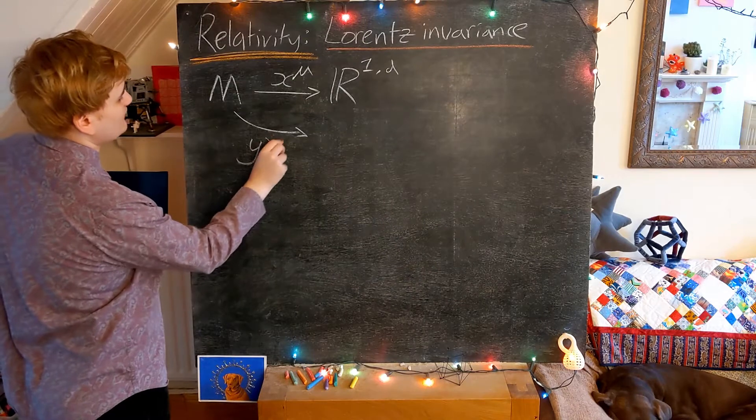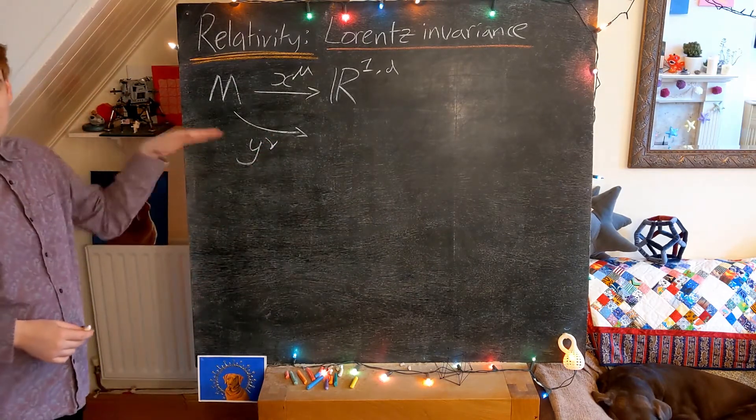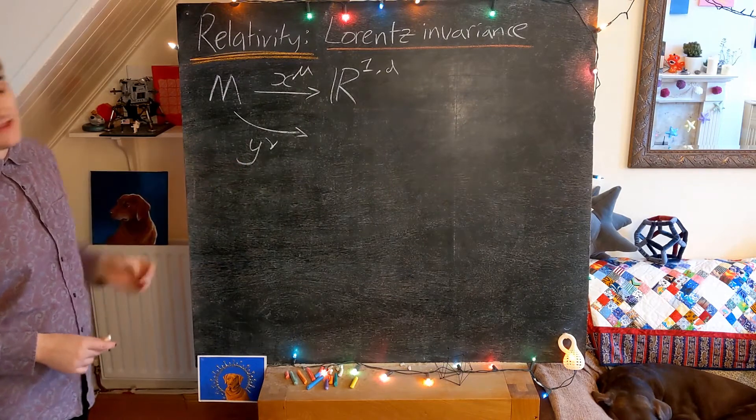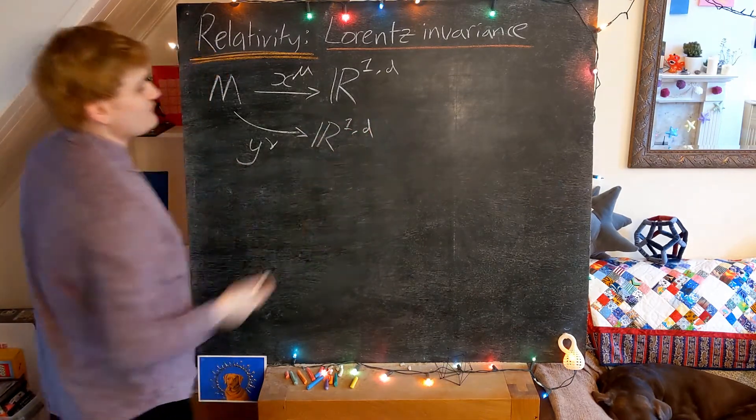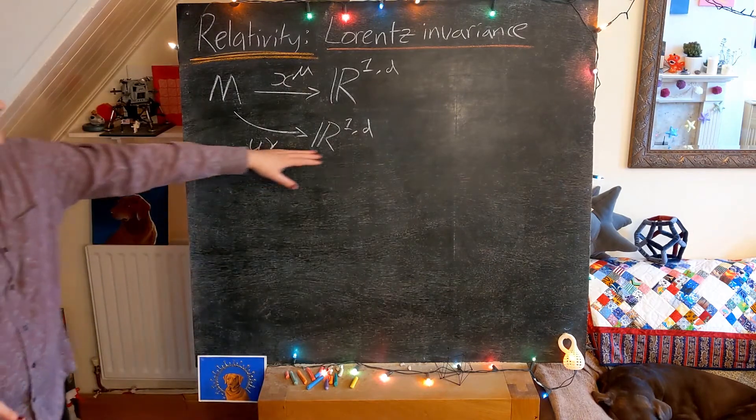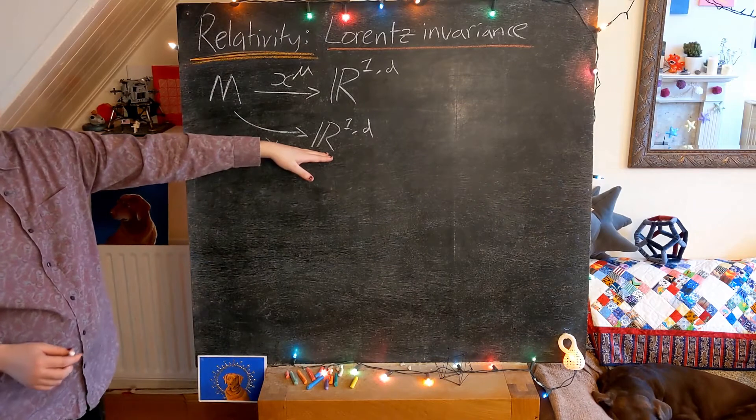We could just as easily have written down some other set of coordinates, say y. We could just as easily have written down another set of coordinates y that's going to map into now a different copy of our R space-time, of our R on d.